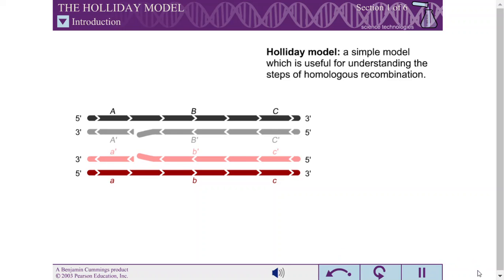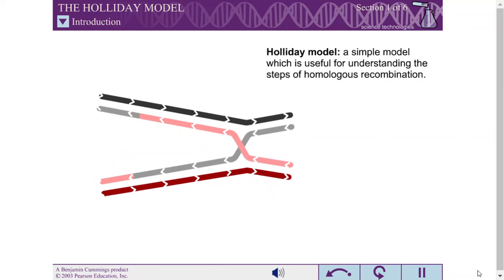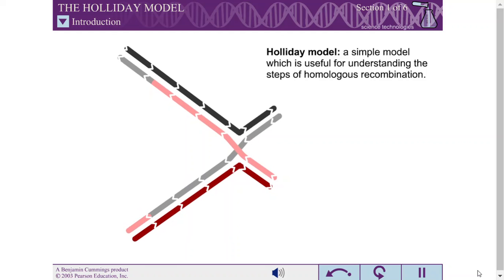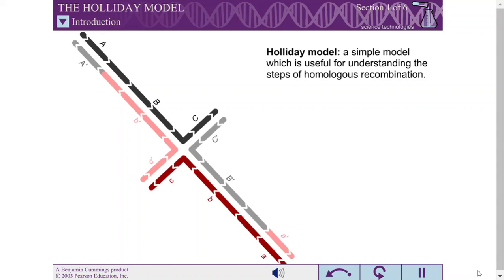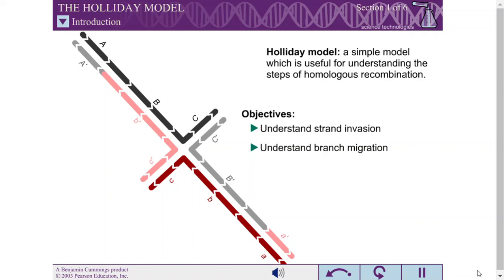The Holliday model is a simple model for homologous recombination. While it is now clear that most recombination events involve synthesis of new DNA, a feature absent from this model, the Holliday model is still useful for understanding recombination. When you have completed this exercise, you should understand how strand invasion can create a Holliday junction, how branch migration leads to recombination, and the differences between the two possible modes of Holliday junction resolution.